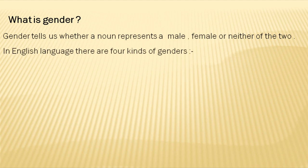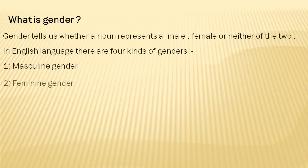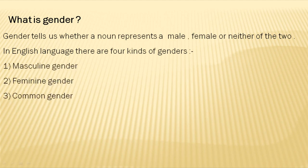In the English language, there are four kinds of genders: Masculine Gender, Feminine Gender, Common Gender, and Neuter Gender.